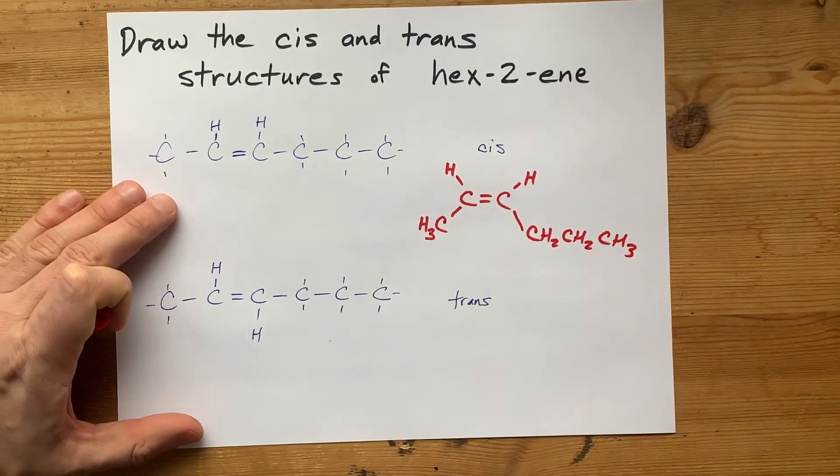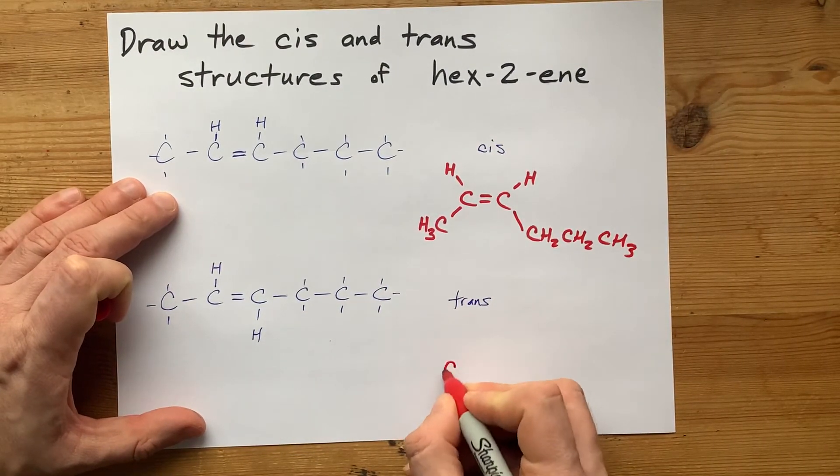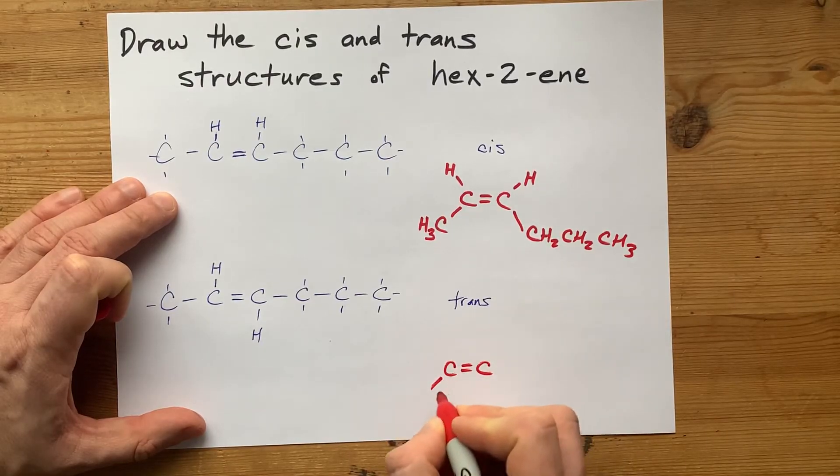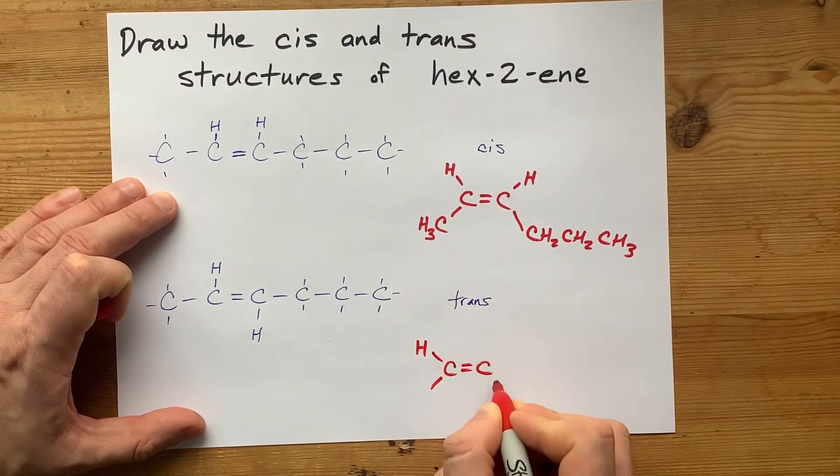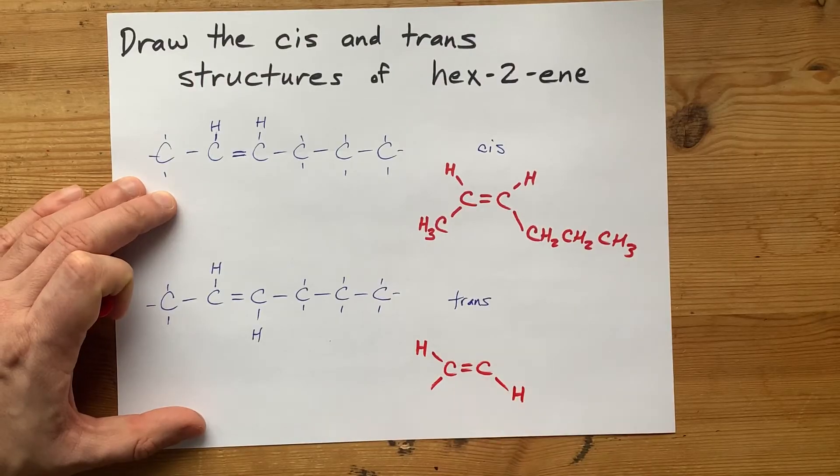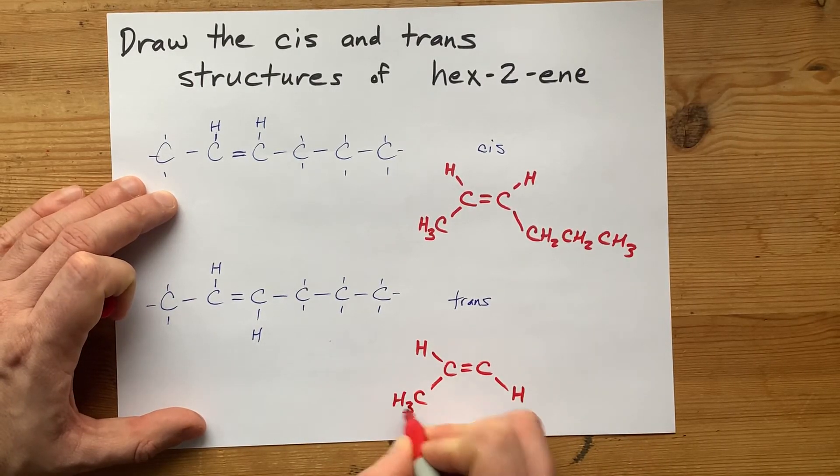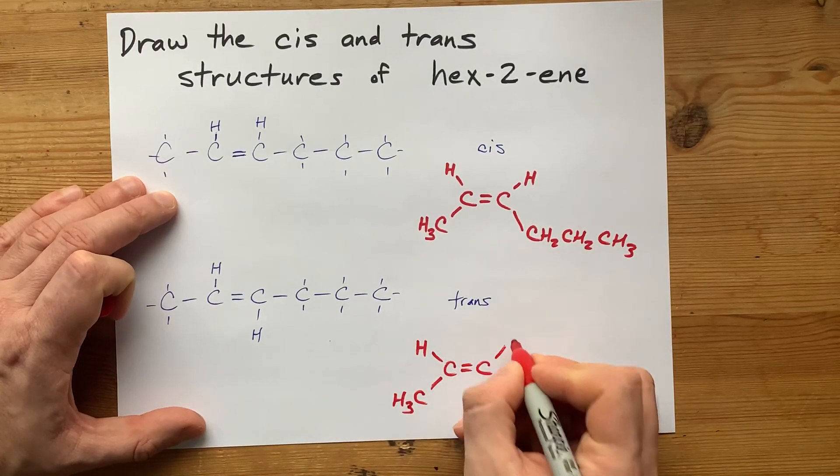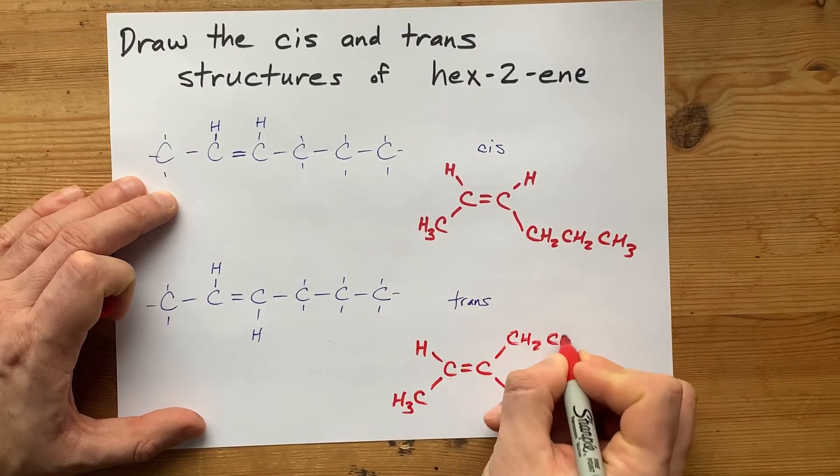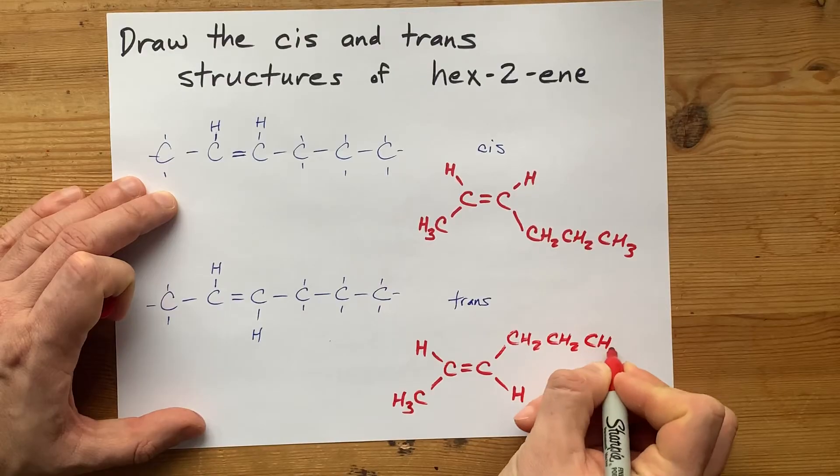The other isomer here has the same double bond, but one hydrogen goes upward. The other hydrogen goes downward, opposite sides. There you go, CH3. And then the other one here is CH2, CH2, CH3.